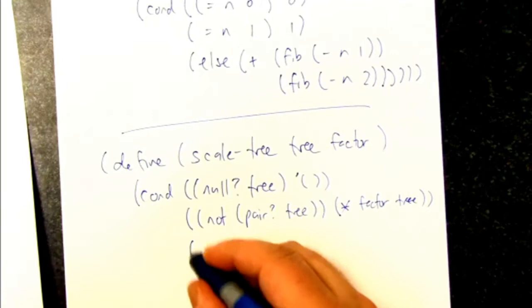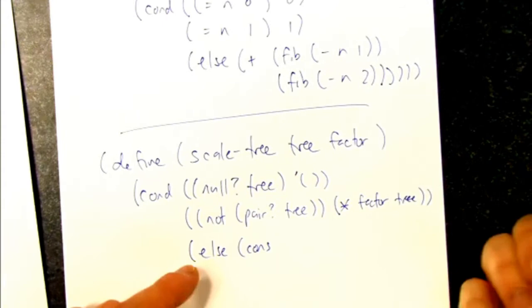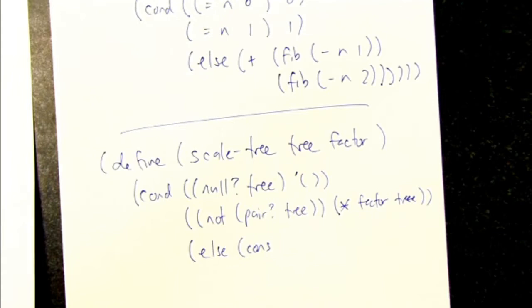Okay. Otherwise, we cons together the result of the recursion. So this builds up. Thinking about like map or filter, when you critter your way down a list and you cons a new one up. Same sort of story with trees.